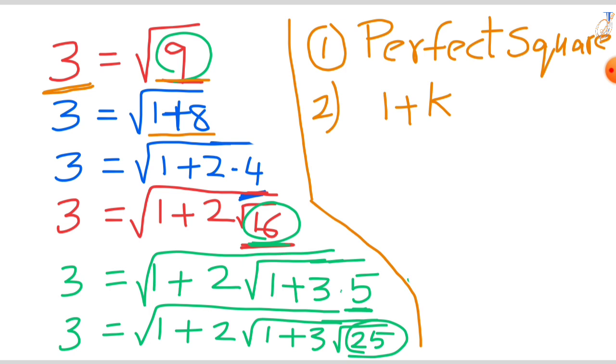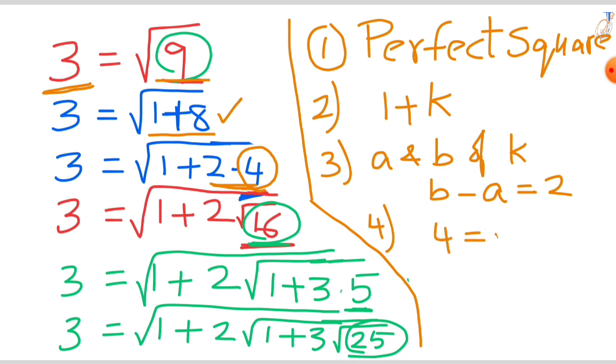Then we find the factors of 8. Consider a and b are factors of k. Observe here the difference between 2 and 4. The difference is 2. So the factor difference is b minus a, that is 2. The last number we write in the form of a perfect square.